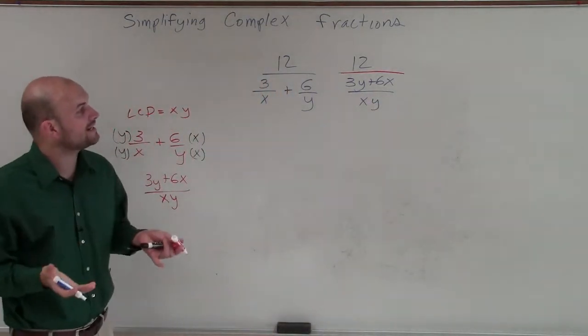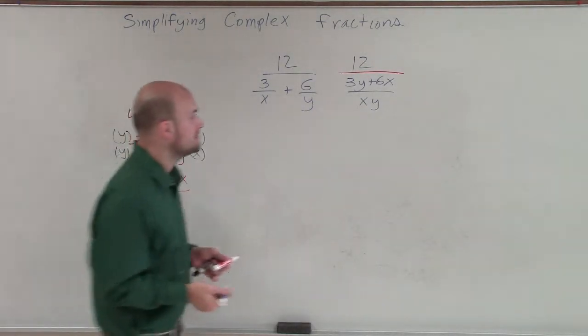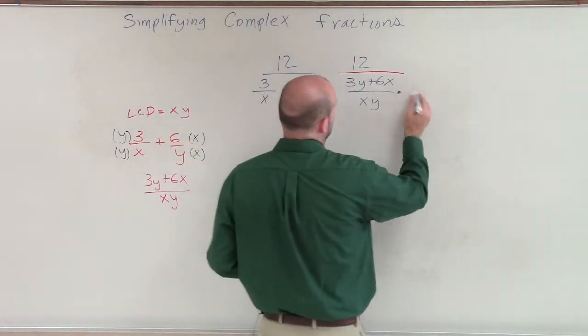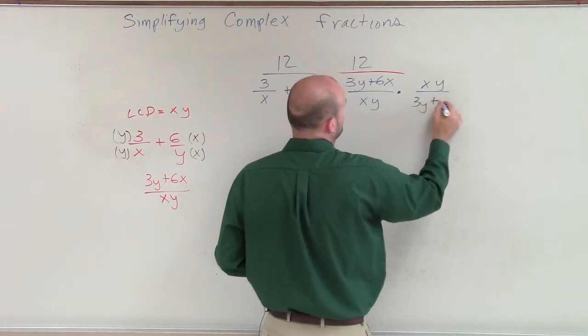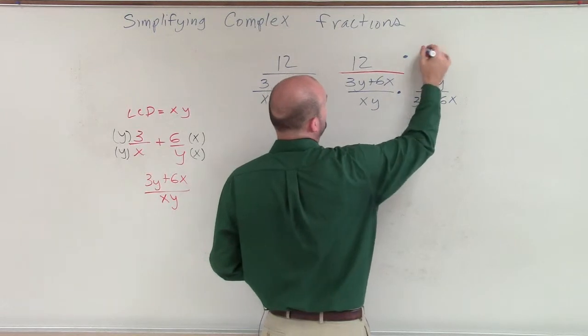So now what I need to do is just simply multiply by my reciprocals. So now I have a fraction that I can multiply by the reciprocal on. So I'll multiply the reciprocal, which is going to be xy over 3y plus 6x. And I multiply that in the denominator and also the numerator.